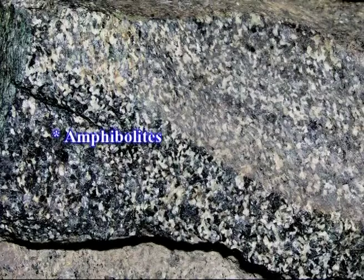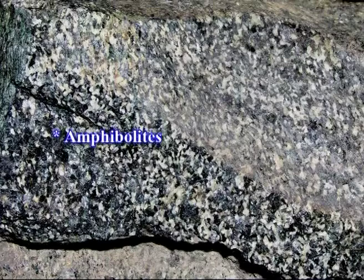Amphibolites: medium- to coarse-grained, dark-colored rocks whose principal minerals are hornblende and plagioclase. They result from the metamorphism of basic igneous rocks. Foliation is highly variable, but when present, the term 'schist' can be appended to the name — that is, amphibolite schist.